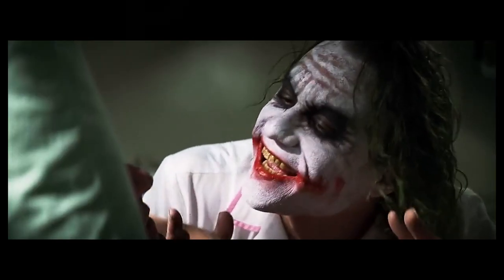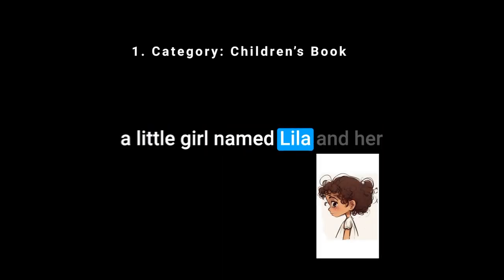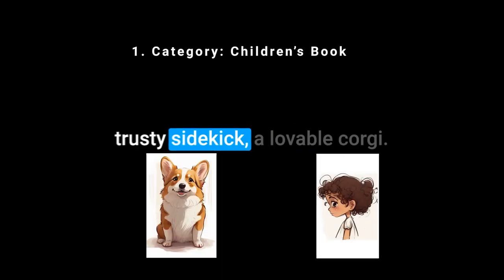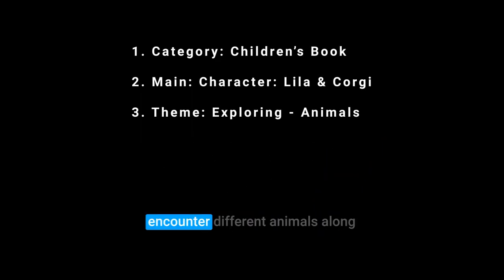Now let's dive into the first part, called the plan. The plan consists of four parts: the book, ChatGPT, Midjourney, and Photoshop and Canva. For my children's book, I've chosen to focus on the adventures of a little girl named Lila and her trusty sidekick, a lovable corgi. They'll explore the world and encounter different animals along the way.